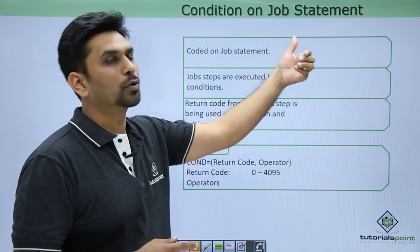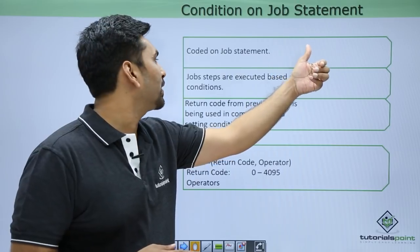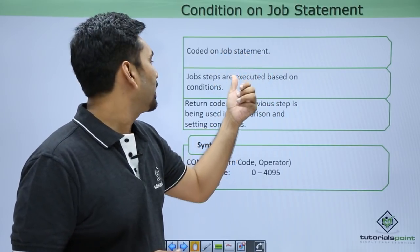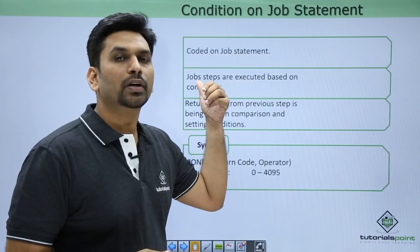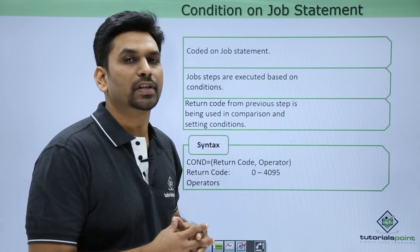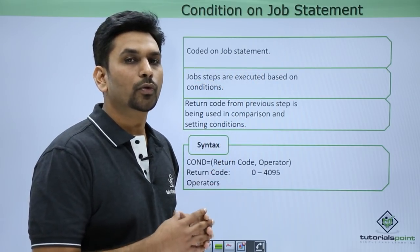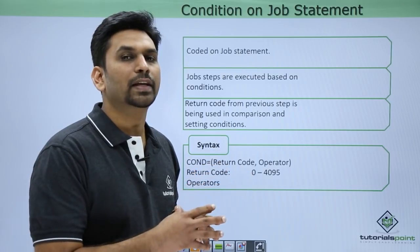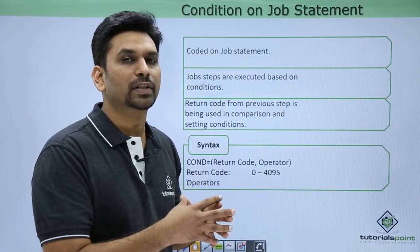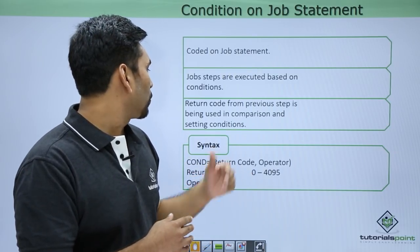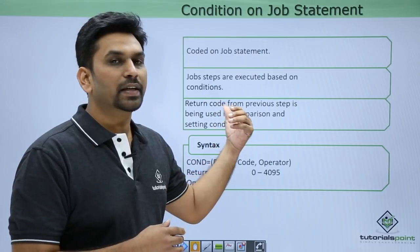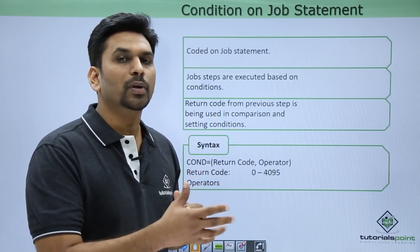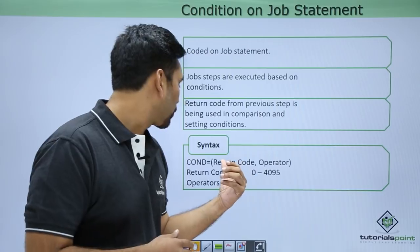We will start with conditions on job statement. They are coded on the job statement and job steps are executed based on the conditions mentioned in the job step itself. If you code a condition at the job statement level, it will be applicable to all the steps in that JCL. It checks the return code from the previous step, which is used for comparison.